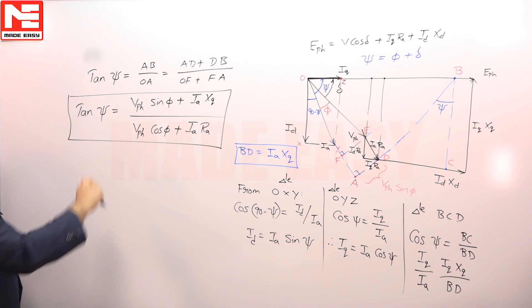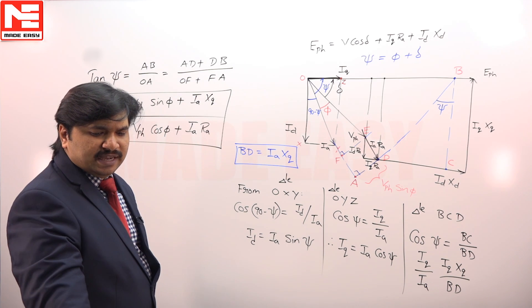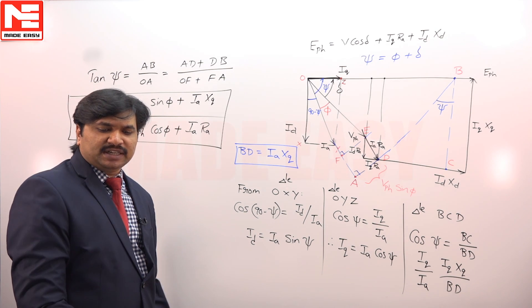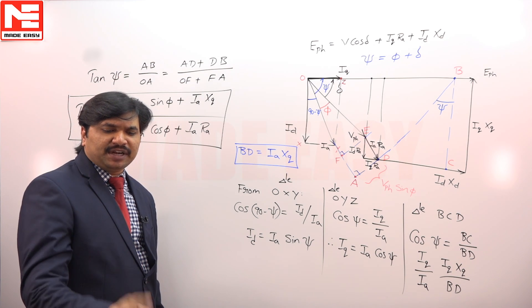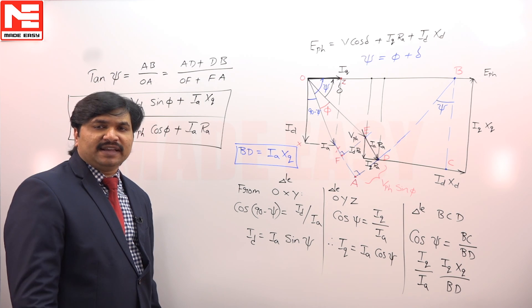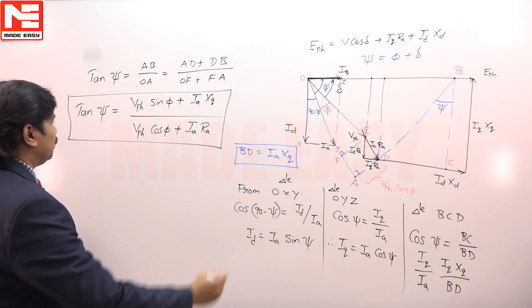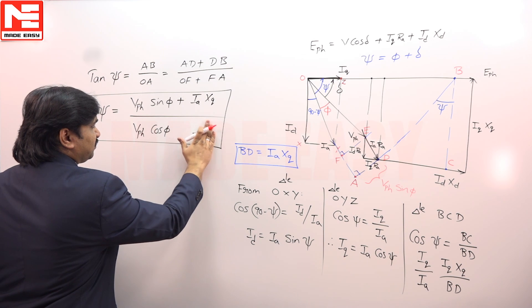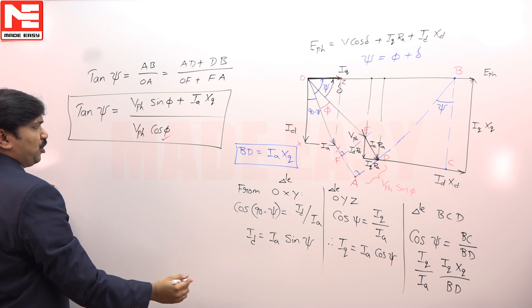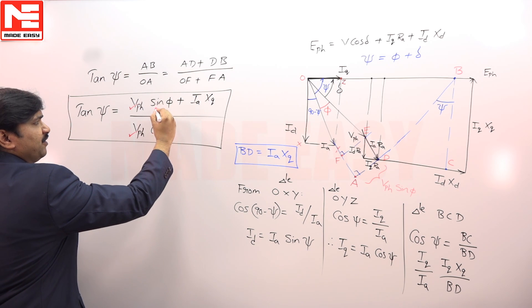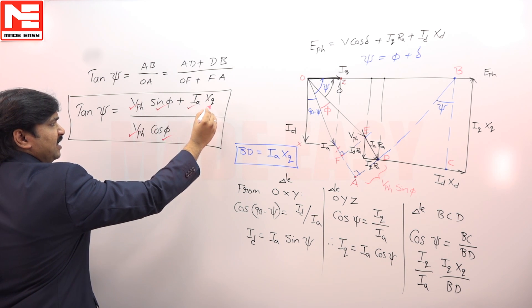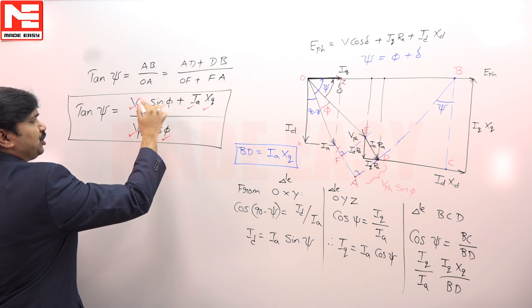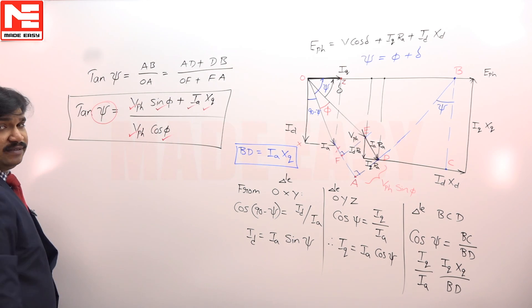In this equation, we know everything. It was given in the question that XD, XQ, supplying rated voltage at 0.8 power factor lagging. So, you can take everything per unit. V per unit, 1 per unit, everything you can take. Phi is also given, 0.8 power factor lagging. Angle is 36.86 degrees lagging. So, what are known here? RA is negligible because nothing is given in the question. We know cos phi, 0.8. We know V phase, 1 per unit. We know sin phi. We know IA. Again, it was given XQ in the question as 0.6 per unit. So, by substituting all, we can calculate psi from this equation.